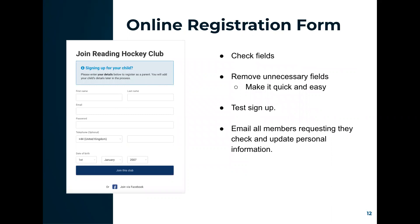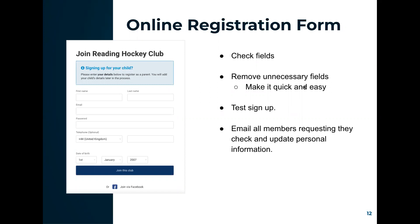Regarding your online registration form, if you've already collected information from previous years, check your fields to make sure they're still applicable — update any changed club policies, remove fields that are no longer necessary such as COVID-related questions. You can also test the sign-up process using a dummy account or a committee member, to see what your members will see. Additionally, you can email all members requesting they check and update their personal information from the membership database.